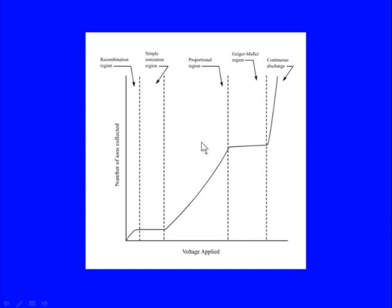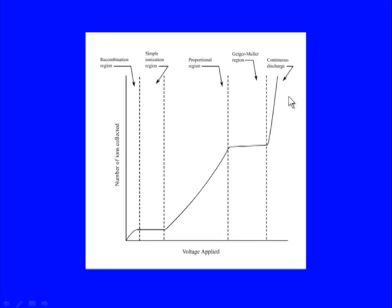After the proportional region, there is another plateau called the GM plateau or Geiger-Müller plateau. In this GM region, as voltage increases, there is no change in the number of ions collected — they are independent of voltage change, showing constancy. After this, if voltage is increased further, there is a continuous discharge region, where even without any radiation or radioisotope, the voltage alone can ionize the gas in the chamber.